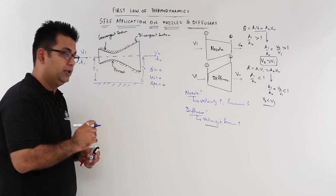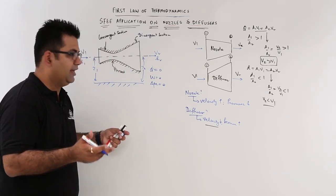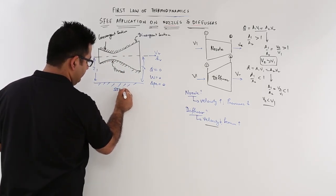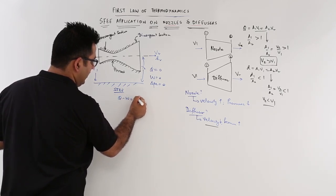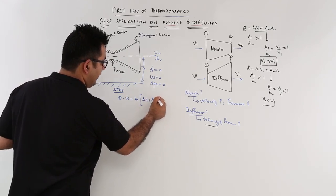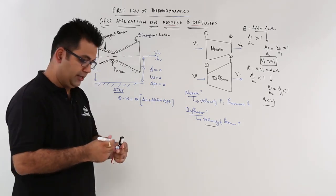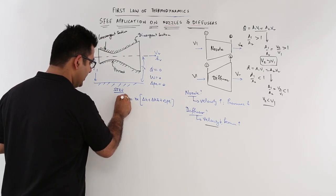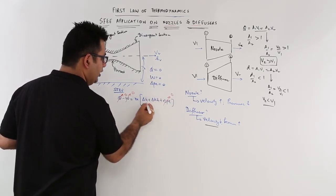So if you write down the SFEE, now what was SFEE? If you remember it, Q̇ minus Ẇ is equal to ṁ into Δh plus Δke plus Δpe. Now in this particular equation, I have this as zero, this as zero, this is zero. So only these two things are left.